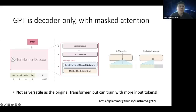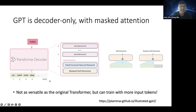GPT is also easier to train because you don't need to mask out individual words the way BERT does. However, without the encoder, GPT is less versatile — it loses the contextual reference from the encoder side. The benefit is that you can make the decoder block larger and attend to more tokens. ChatGPT reportedly handles up to 4,000 tokens, though it may handle even more in practice.